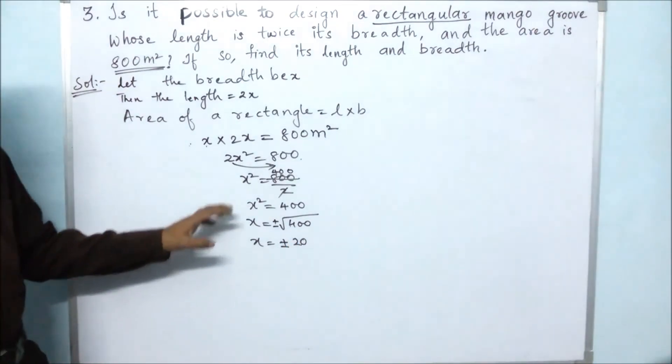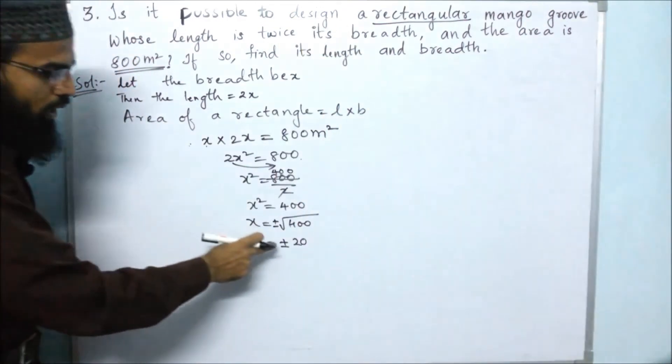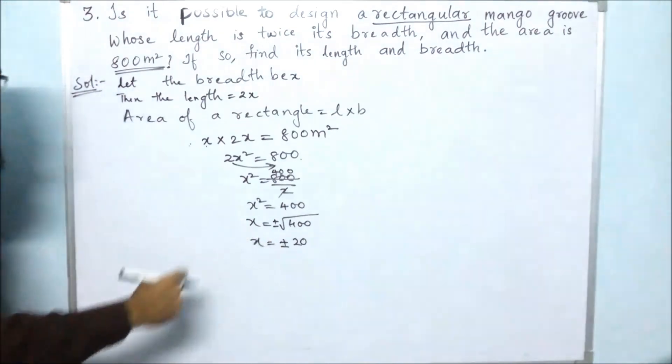As we know, the breadth can't be negative, so we will ignore the negative value. We will take just the plus sign.